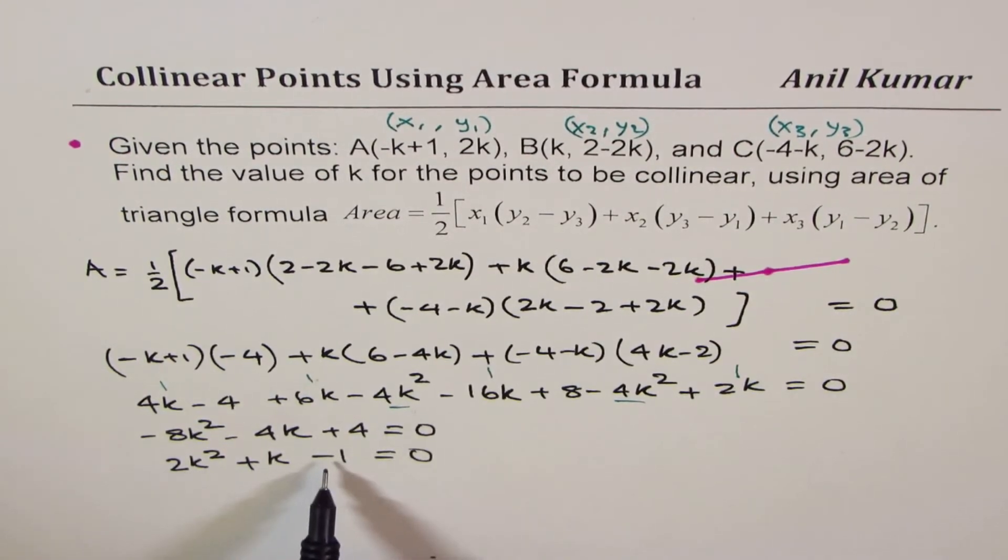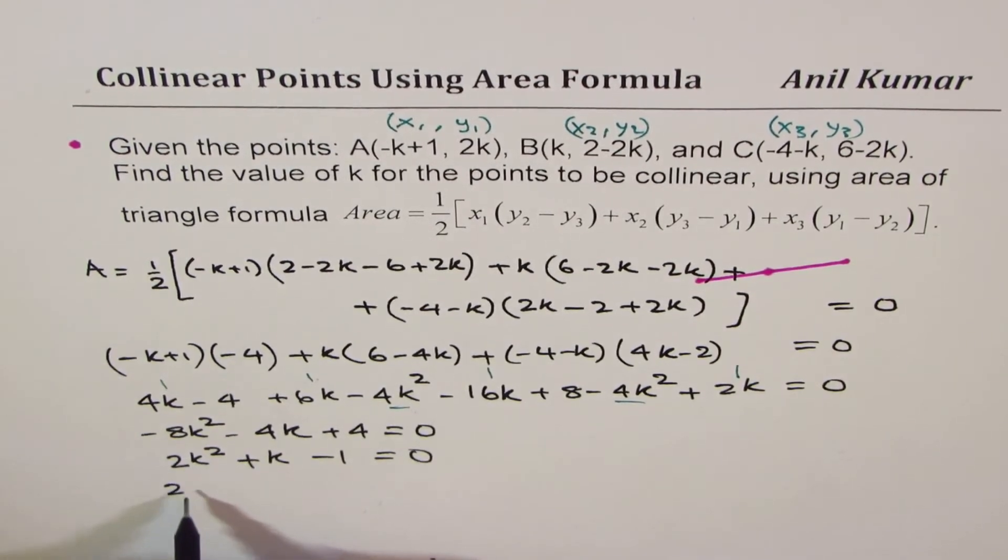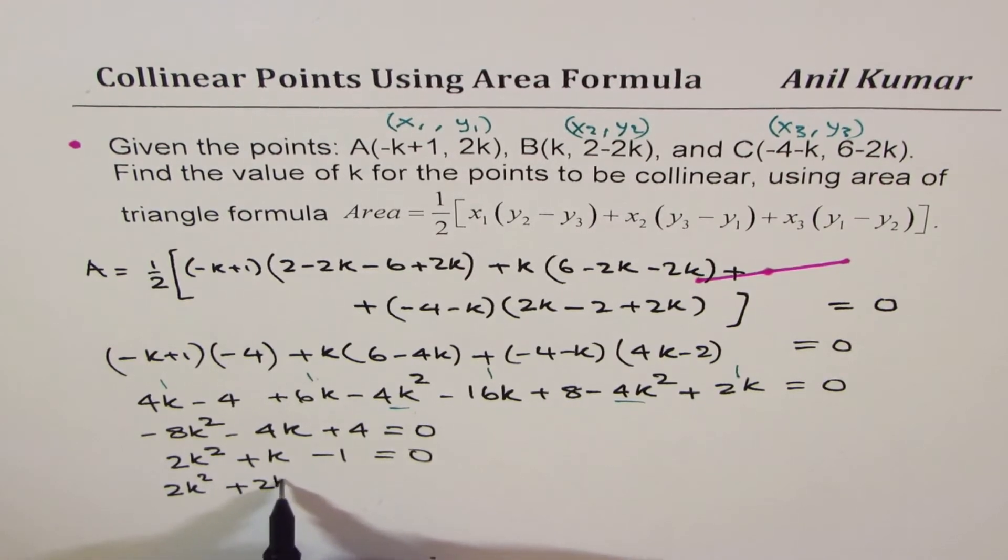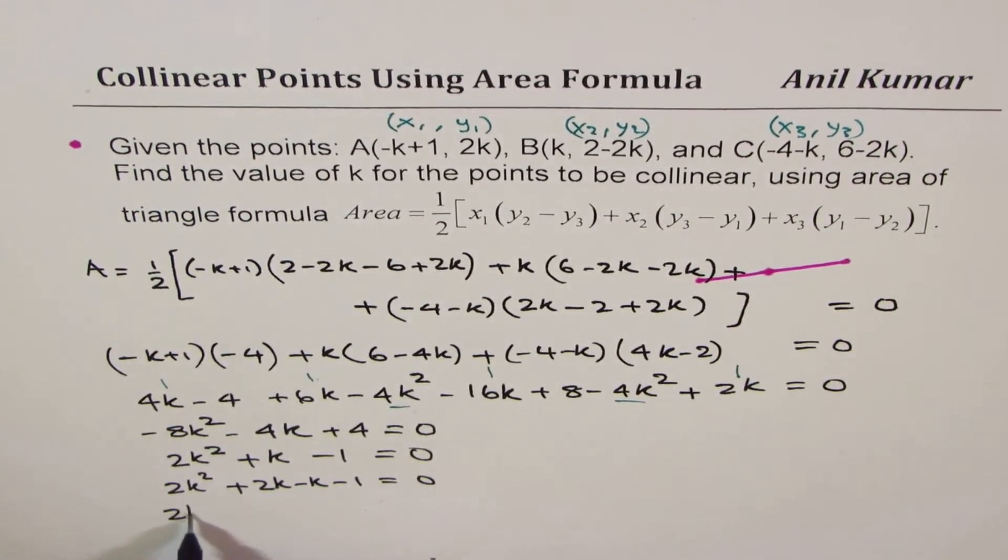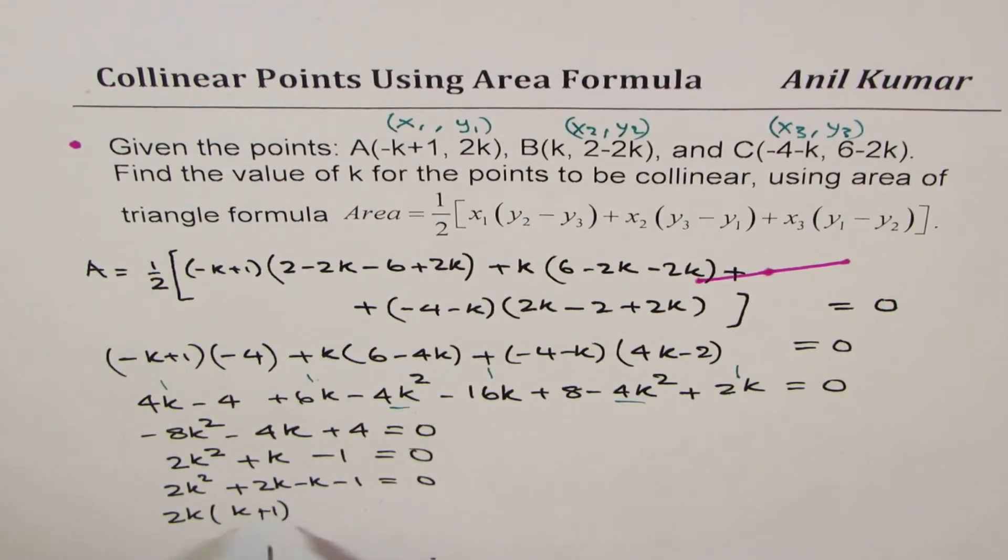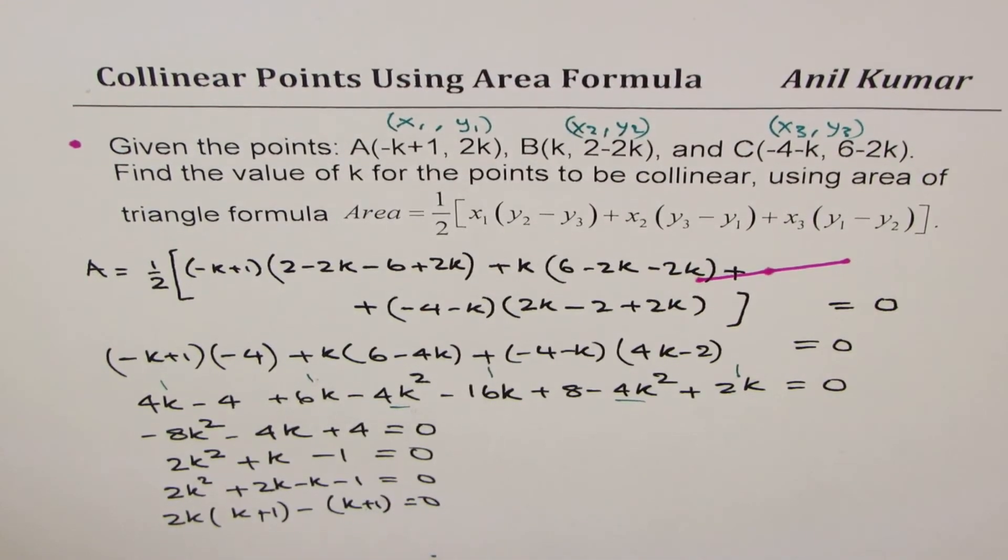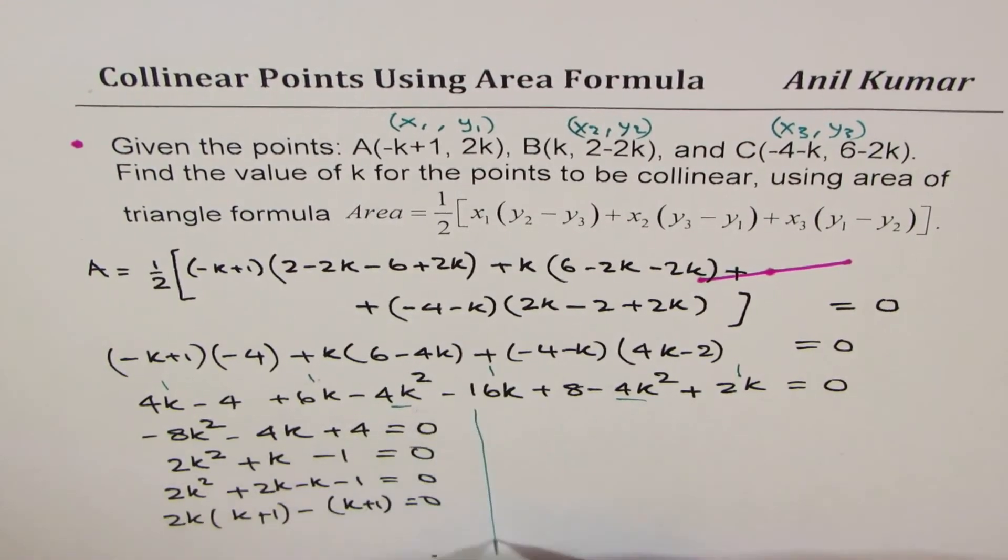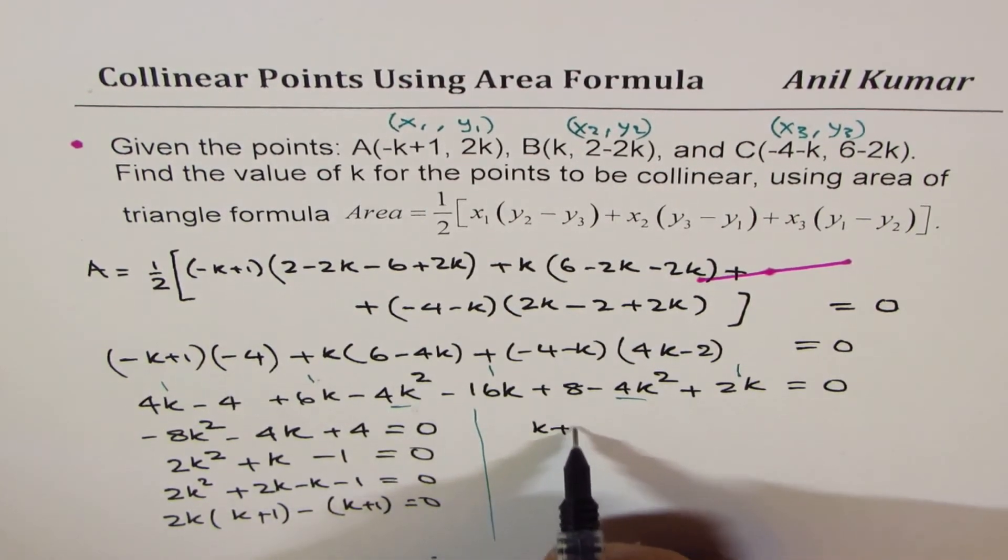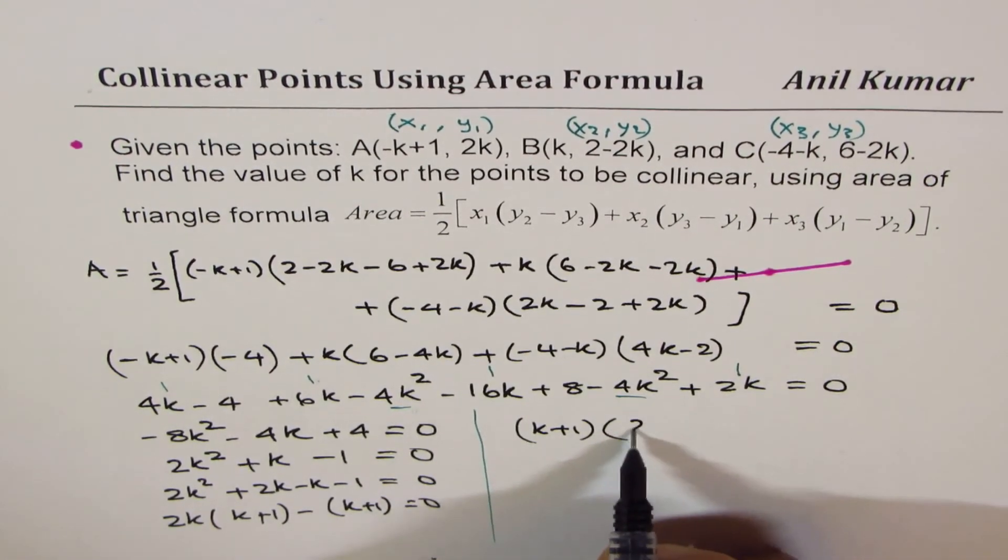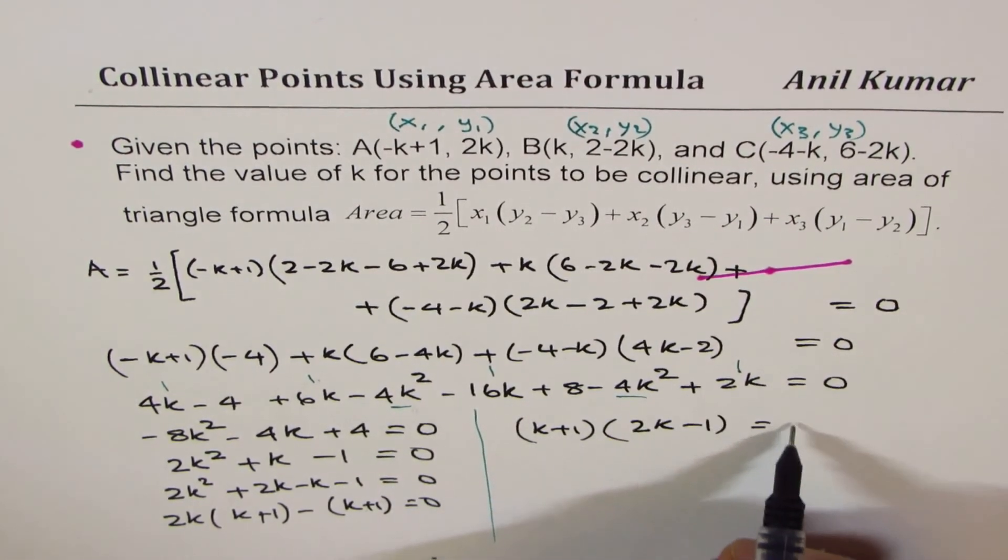Product is -2, sum is plus k. So we can factor this. So we get 2k²+2k-k-1 equals to 0. 2k is common, so we get k-1, I mean k+1, -k+1 equals to 0. So let's take it to the right side and then we'll solve it further. k+1 is common and we get 2k-1, 2k-1 equals to 0.